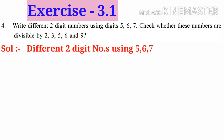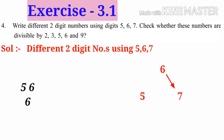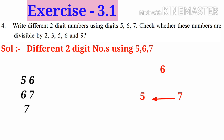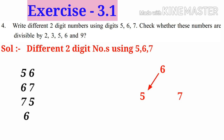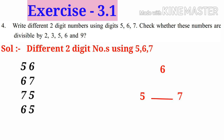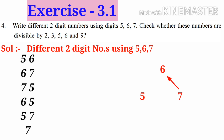Solution. Different two-digit numbers using 5, 6, 7. Taking them in clockwise direction: 56, 67, 75. In anticlockwise direction: 65, 57, 76.